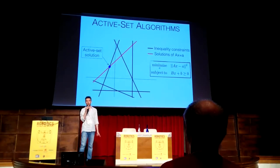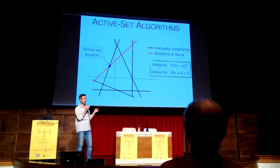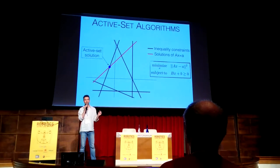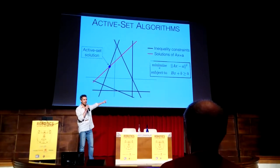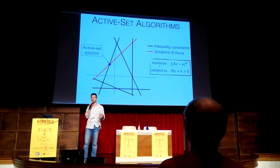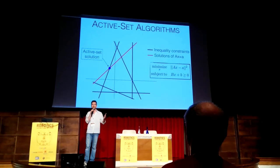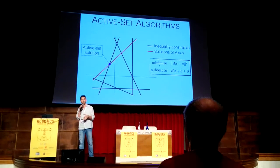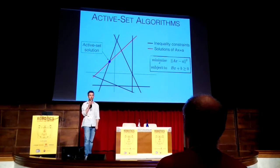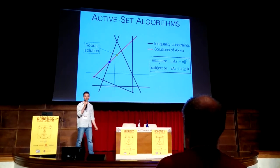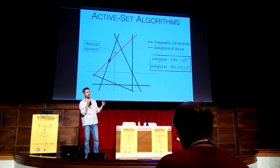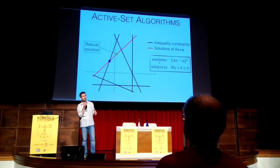If you solve this problem with an active-set algorithm it will give you that solution, which is not at all a good choice because you are right on the boundary of your feasible set. This means that if you have even a tiny uncertainty in your problem data you may be outside of your feasible set — in practice, your robot may be slipping and falling, you may be burning a motor, or hitting a joint limit. A much better choice would be a solution like the yellow dot, because you are far away from the boundary of your feasible set and have a much higher chance of being feasible in practice.